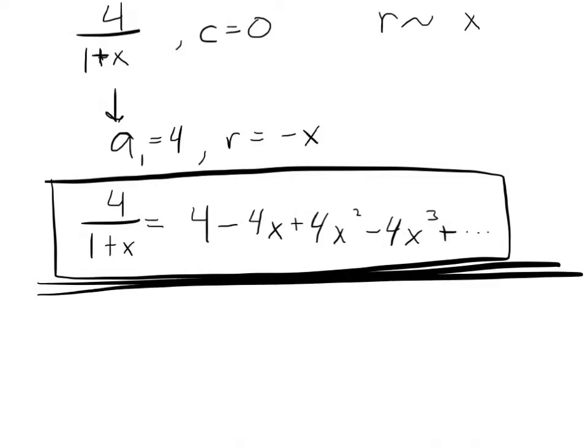What if, instead, I asked for a power series for 4 over 1 plus x but not centered at zero anymore? It's centered at 1. This is now more complicated. We set up above that because I was centered at zero before, my common ratio needed to be related to x. Now that I'm centered at 1, what does my common ratio need to be related to?